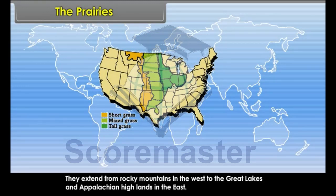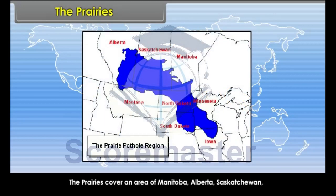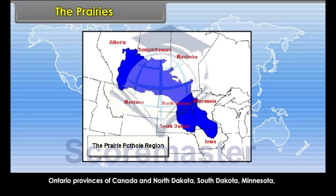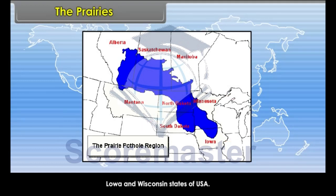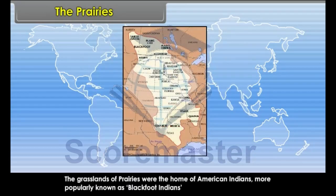The Prairies cover an area including the Manitoba, Alberta, Saskatchewan, and Ontario provinces of Canada, and the North Dakota, South Dakota, Minnesota, Iowa, and Wisconsin states of the USA. The grasslands of the Prairies were the home of American Indians, more popularly known as Blackfoot Indians.